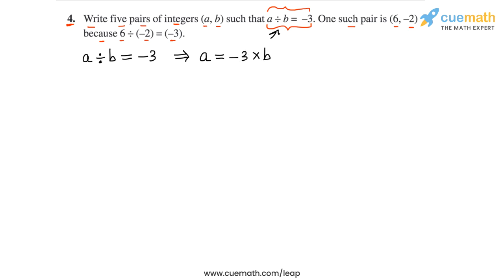So we can pick any five non-zero integer values for b, and for each value of b we can find the corresponding value of a using this relation. Let's do that now.